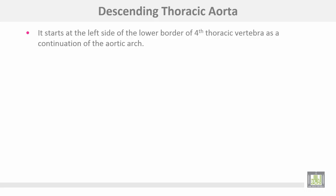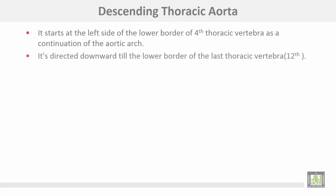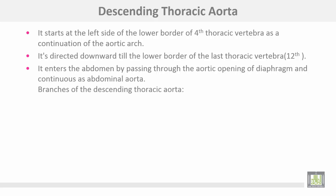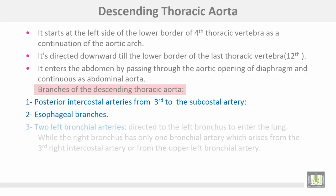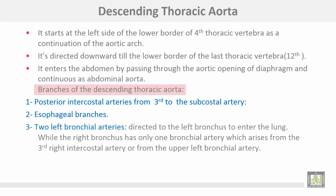The descending thoracic aorta starts at the left side of the lower border of the 4th thoracic vertebra as a continuation of the aortic arch. It is directed downwards until the lower border of the last thoracic vertebra, where it enters the abdomen by passing through the aortic opening of the diaphragm and continues as the abdominal aorta.